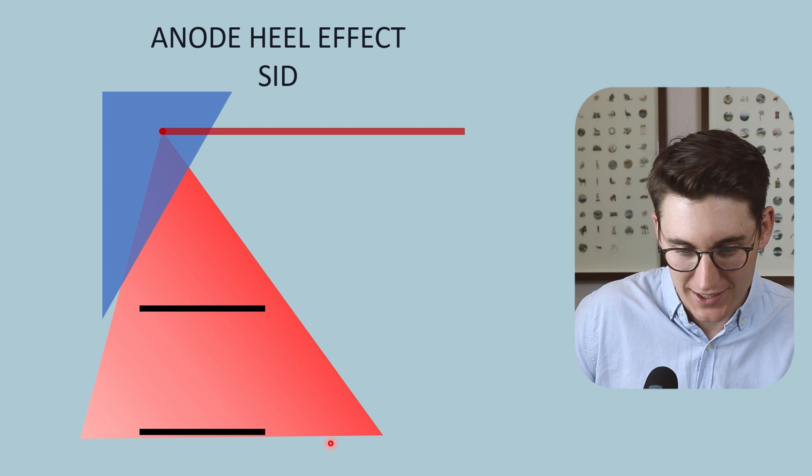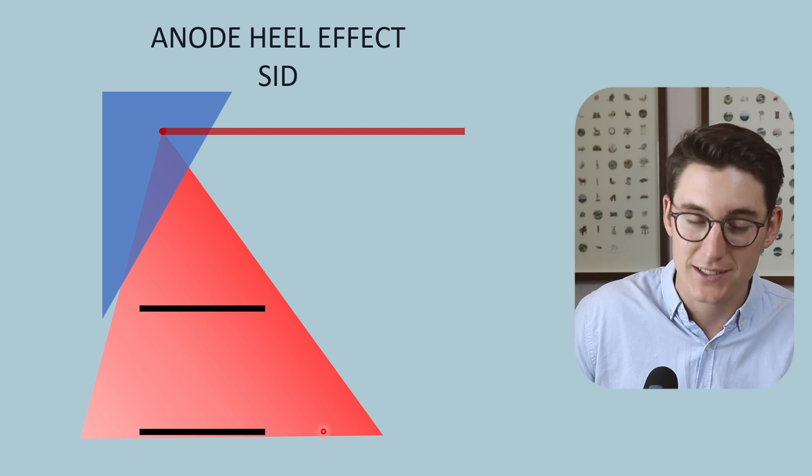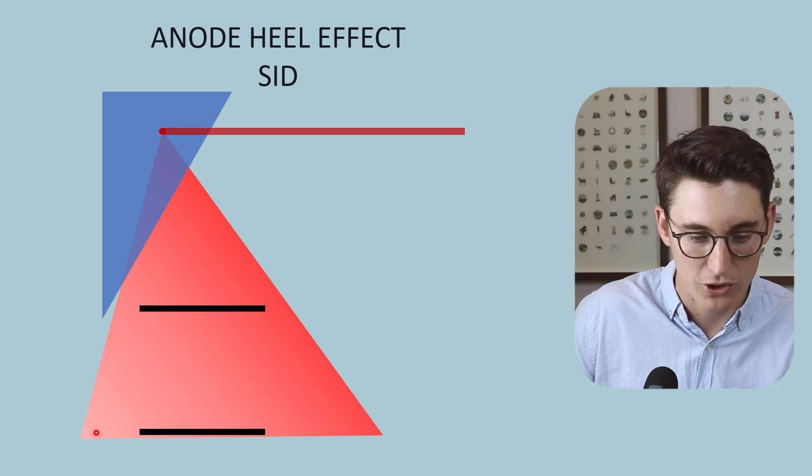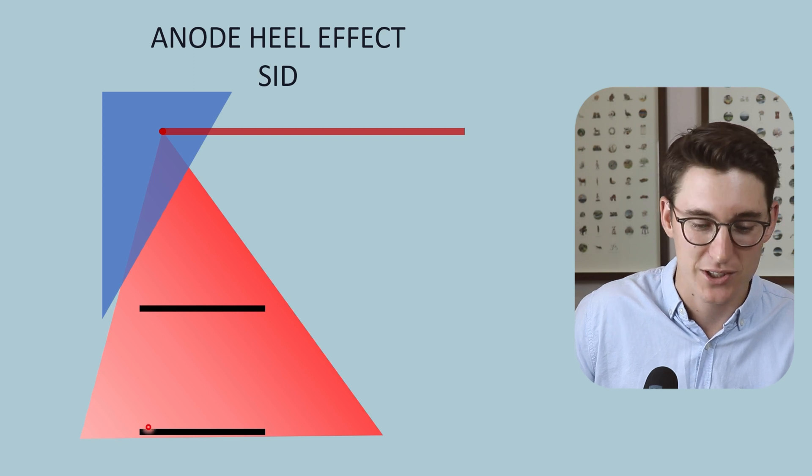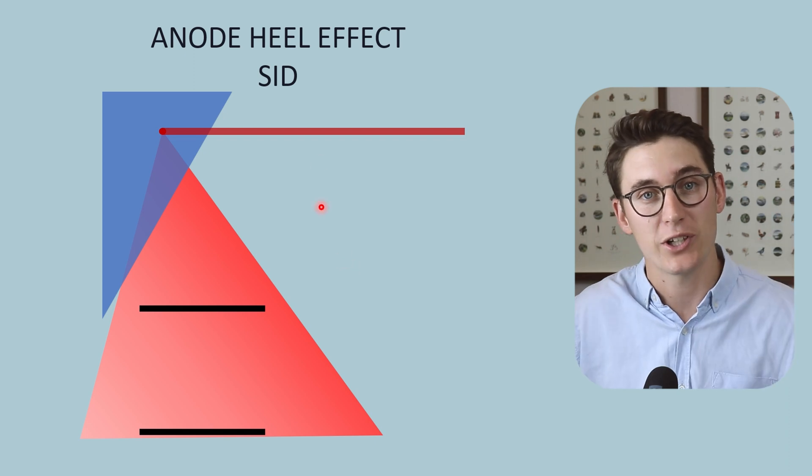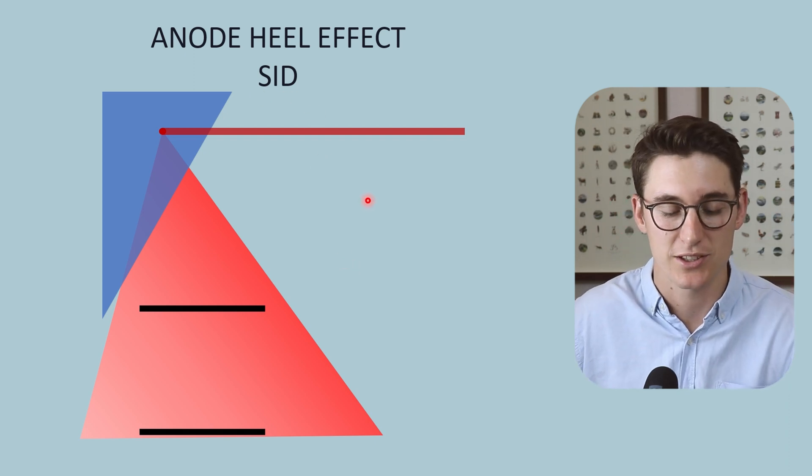That variation between this end of our detector and this end of our detector is now less. We are not getting these high energy or high intensity x-rays here and we've lost some of these low intensity x-rays here. That variation is less. We've reduced our anode heel effect by increasing our source to image distance.